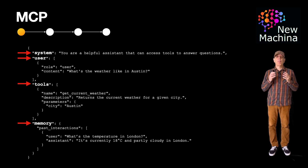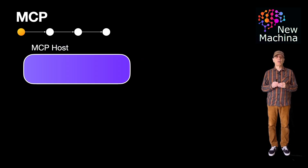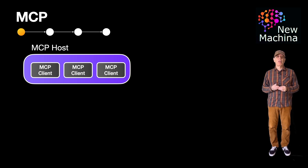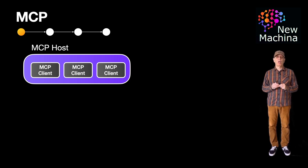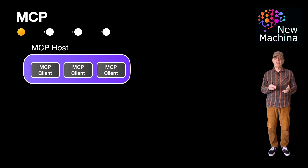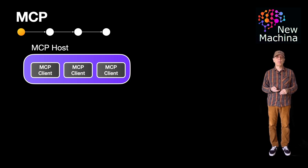Let me describe the components defined in an MCP system. First is the MCP host. Think of this as the IDE or chat front-end. Next is the MCP client. Think of this as living in the MCP host and as providing the connection to the MCP server. Each MCP client is connected to one MCP server. Your MCP host can have multiple MCP clients, each connecting to different MCP servers.